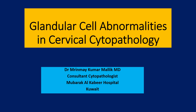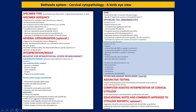Hello, everyone. Welcome to the sixth lecture in our cervical cytopathology series. Today, we shall take a look at glandular abnormalities. As usual, we shall begin with a bird's eye view of the Bethesda system to ensure that we are on the same page as far as Bethesda terminology is concerned, and this is what we are going to see in the very next slide.